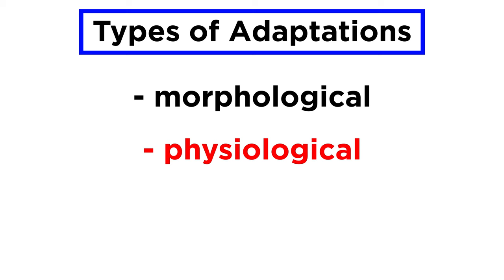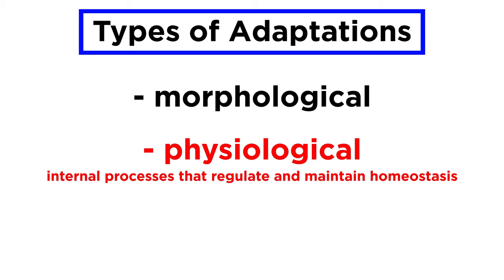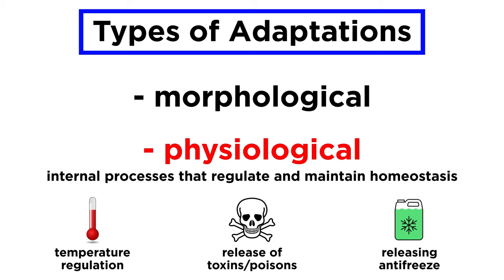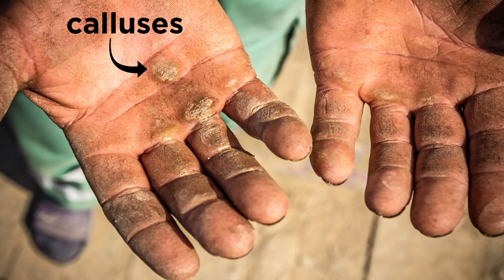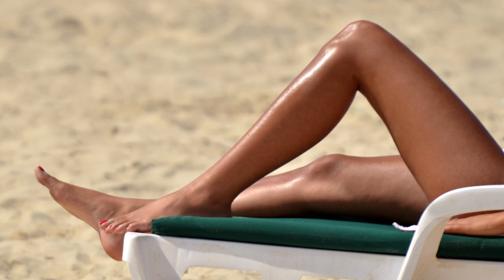Adaptations can be physiological in nature as well. These are internal processes that regulate and maintain homeostasis, so that an organism is able to survive in the environment in which it exists. Examples include temperature regulation, release of toxins or poisons for protection, and even releasing natural antifreeze in the form of proteins to avoid freezing in cold environments. When it comes to humans, calluses on our hands can be considered physiological adaptations to repeated contact or pressure, as can tanning or darkening of the skin after repeated exposure to the sun.